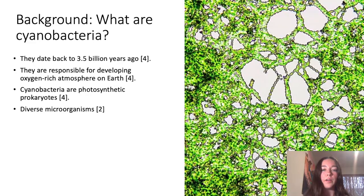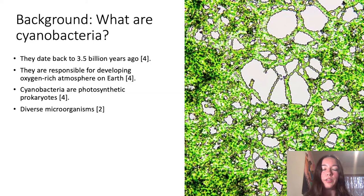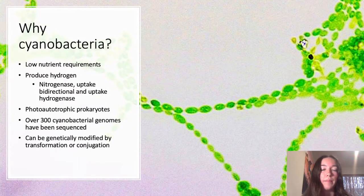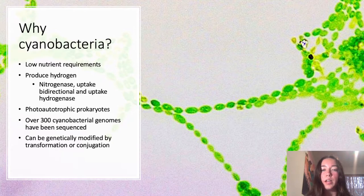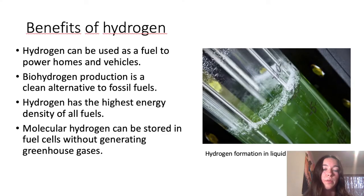For a quick background, cyanobacteria are photosynthetic prokaryotes that date back to 3.5 billion years ago. They are easy to use in the lab because they require low amounts of nutrients to survive. We will be focusing on the fact that cyanobacteria produce hydrogen, which is important because it can be used as an alternative fuel as opposed to fossil fuels.